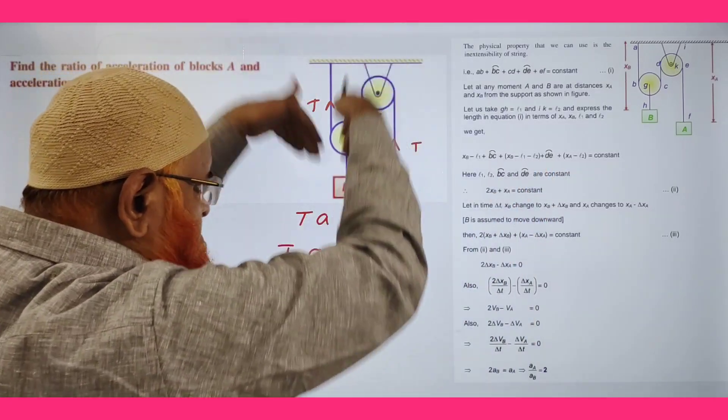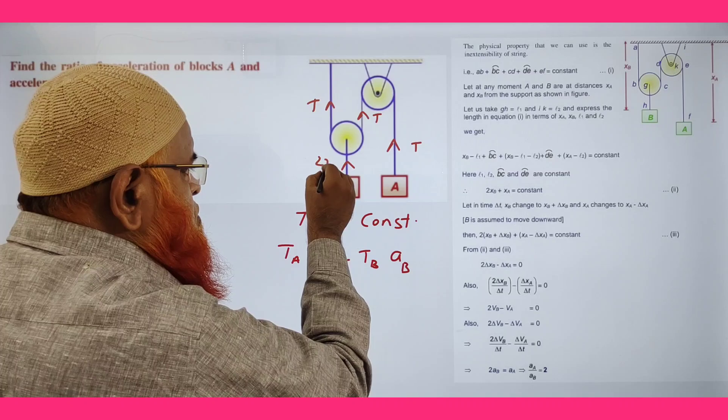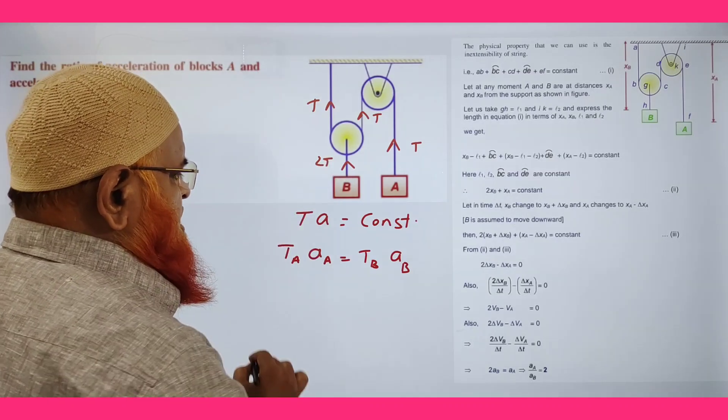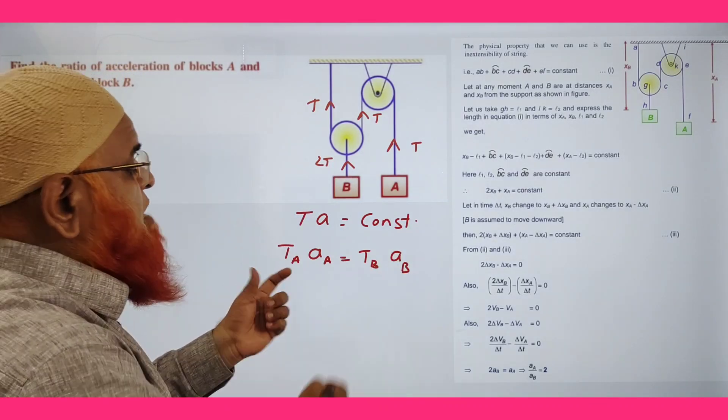But these two tensions combined together, here tension is taken as 2T, so 2T. So here TA times AA equals TB times AB.